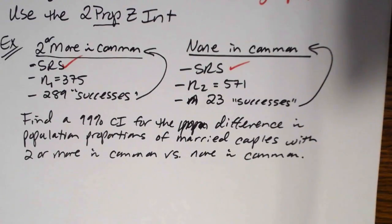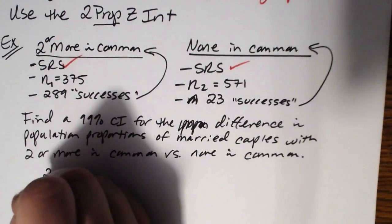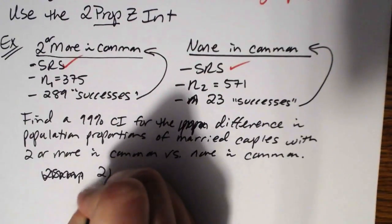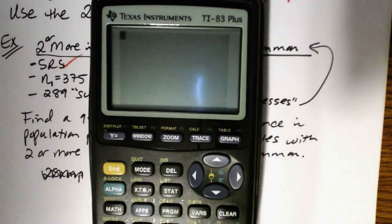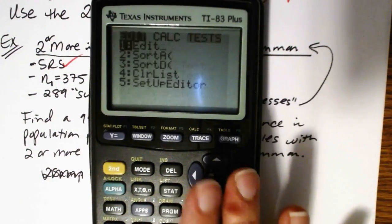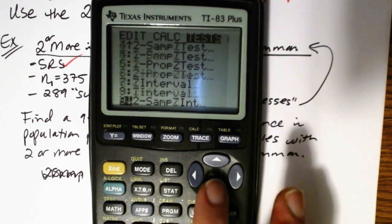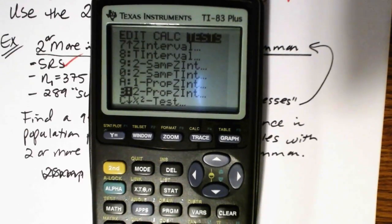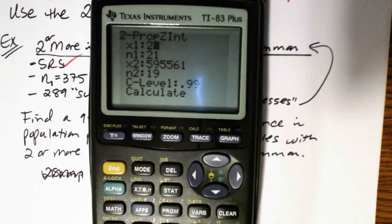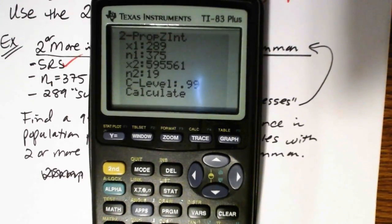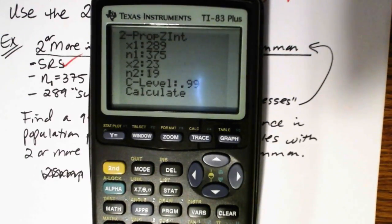Since our conditions for inference are met, we can go ahead and calculate the confidence interval. We want to use the 2-PropZInt on the calculator. Go to STAT, then all the way to the right to TESTS, scroll down, and select 2-PropZInt. When it asks for x1, enter the number of successes in the first sample: 289. The sample size n1 is 375. For the second group, x2 = 23 and n2 = 571. We want a 99% confidence interval, so leave that and calculate.